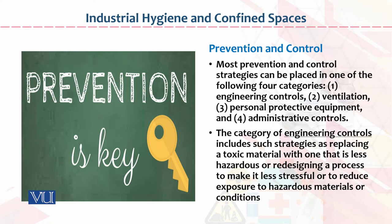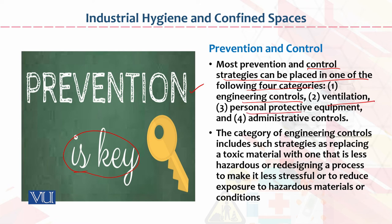Prevention and control को देखें तो prevention is key। Most prevention and control strategies can be placed in one of four categories: engineering control, ventilation, personal protective equipment, and administrative control। ये चारों चीज़ें बहुत important हैं। Engineer की duty है control करना, ventilation system ensure करना। PN से लेके CEO तक हर बंदे ने personal protective equipment पहनने हैं, और administration का control strong होना चाहिए। अगर ये चारों exist कर रही हैं, तो you are going to prevent and control all physical environment issues within the organization।